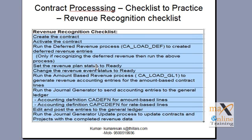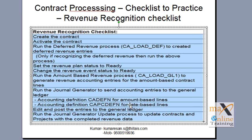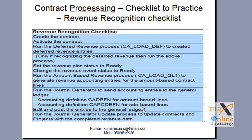Then you will run the deferred revenue along with this one. Run the amount-based revenue process and then run the journal generator to send accounting entries to the general ledger. These are the two accounting definitions — one is for contract-based and one is PC-based, project costing-based accounting definition. Then you run the journal JGen, and finally run the general update process to update the contract projects with the completed revenue data back to contract.